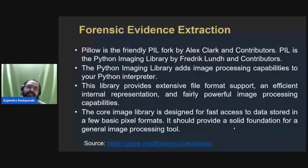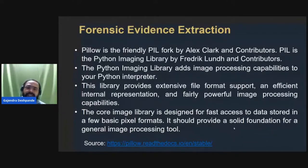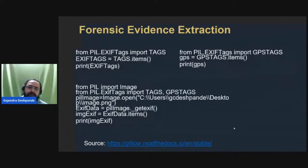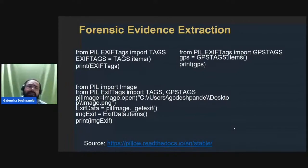For forensic evidence extraction, the Pillow library — a Python Imaging Library — can be used. It adds image processing capabilities to the Python interpreter with extensive file format support and efficient internal representation. Using EXIF tags, you can extract file properties of an image using tags.items(). For GPS tags, latitude and longitude information can be extracted. You can import both the tags and GPS tags modules to extract both file properties and location information simultaneously.